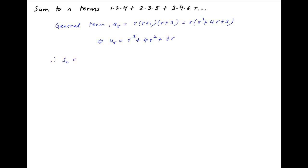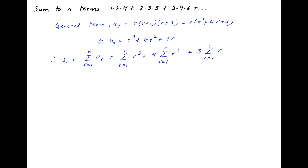Therefore, the sum of the first n terms of the series, which is equal to the summation of u_r with r going from 1 to n, is equal to the summation of r³ plus 4 times the summation of r² plus 3 times the summation of r, all summations going from 1 to n.